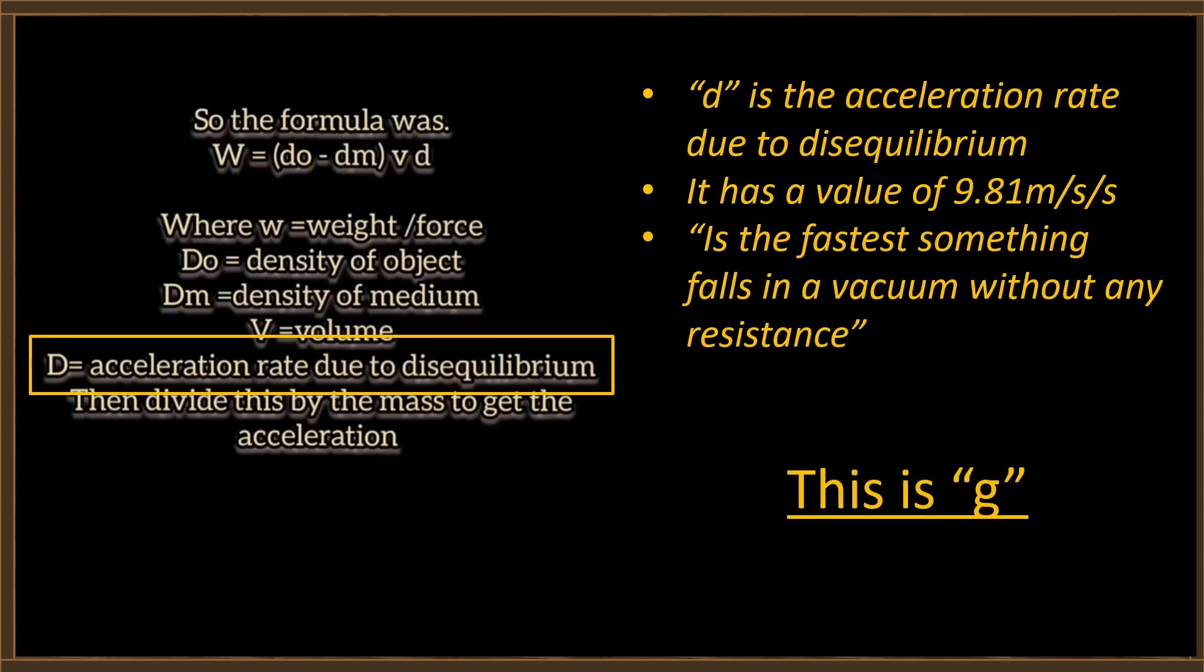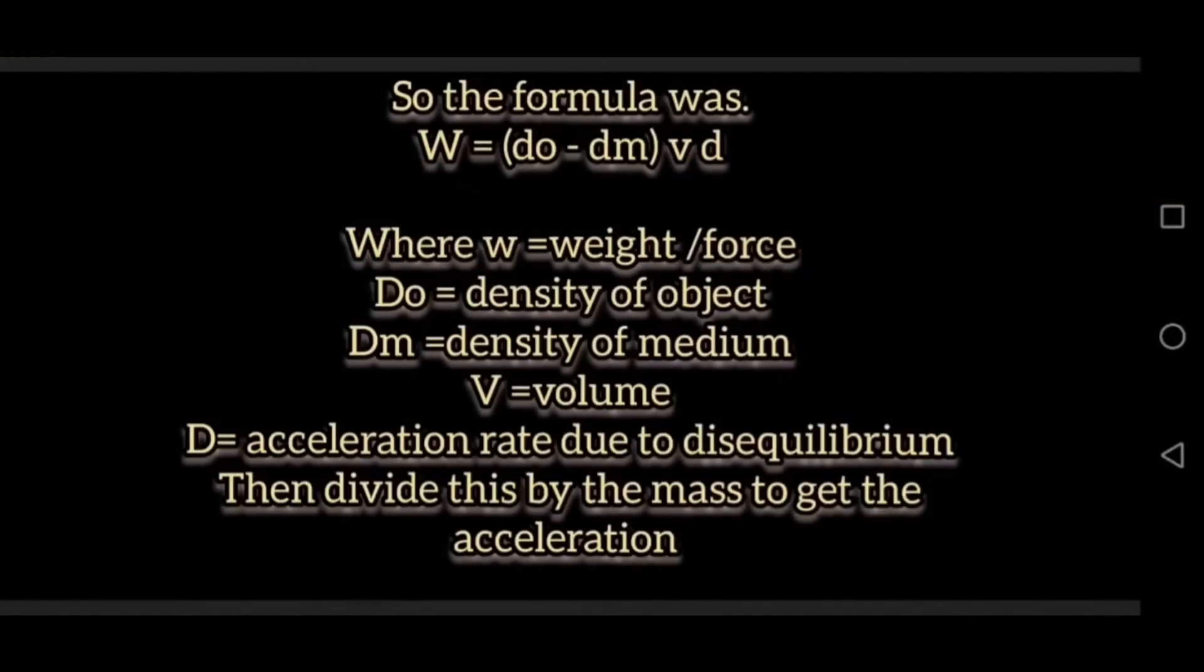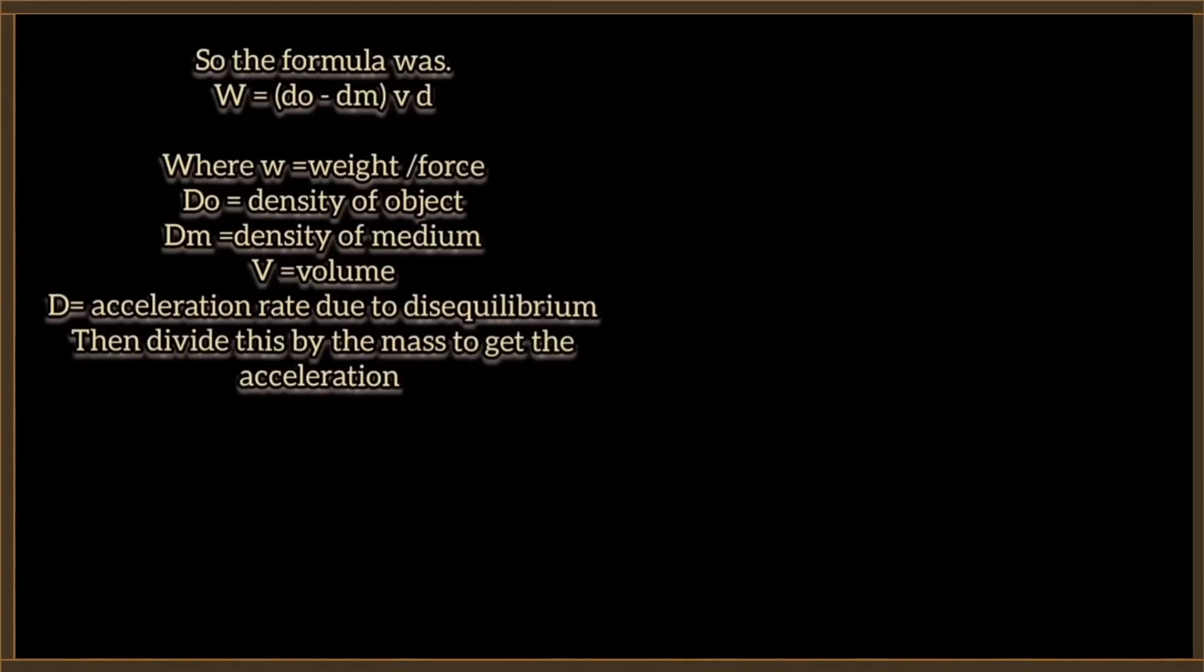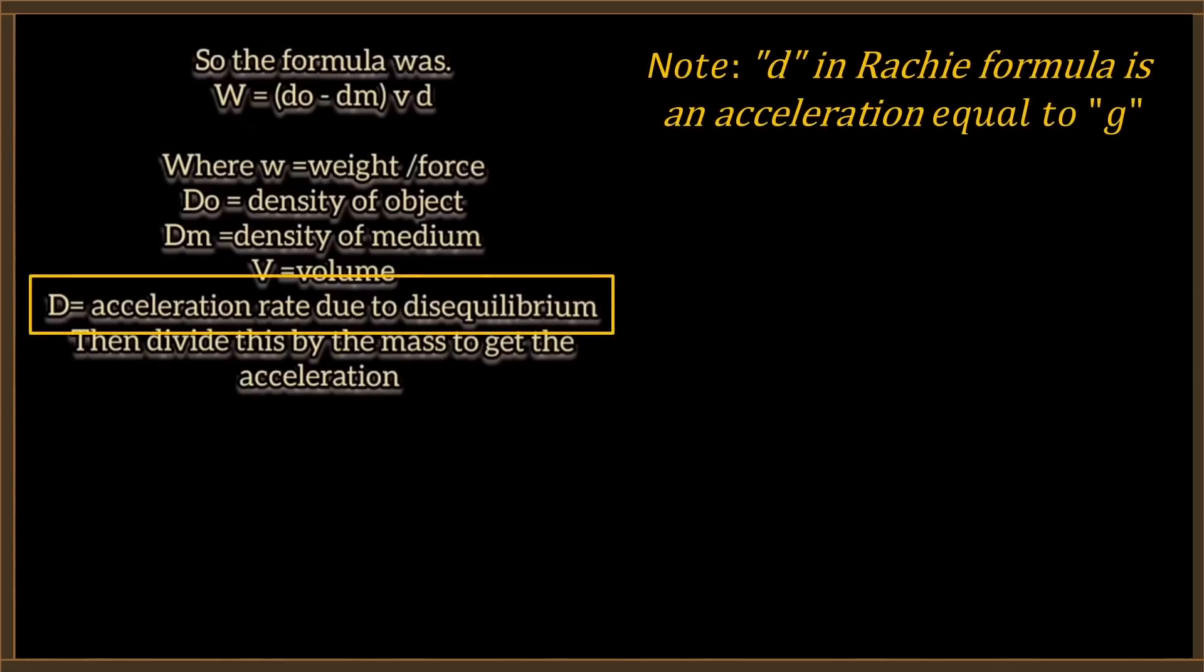I think you meant to say it's the fastest something accelerates in a vacuum without any resistance. Rachie, this is the definition of what we call little g. You just inserted the acceleration of gravity on Earth at sea level in a vacuum in your equation for disequilibrium. This disequilibrium rate of 9.81 meters per second per second, which is the fastest, basically, that something falls in a vacuum, without any resistance, with minimal effects, basically. So you've replaced the acceleration of gravity that we call little g with d, which you call the acceleration rate due to disequilibrium, but you haven't told us how that works.